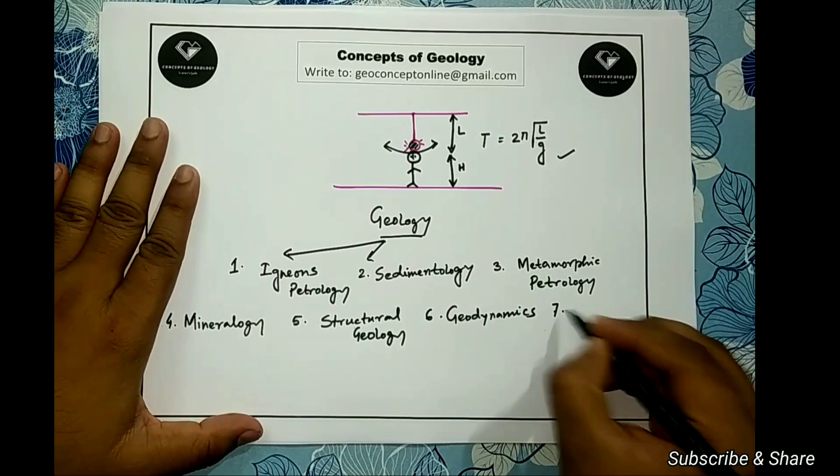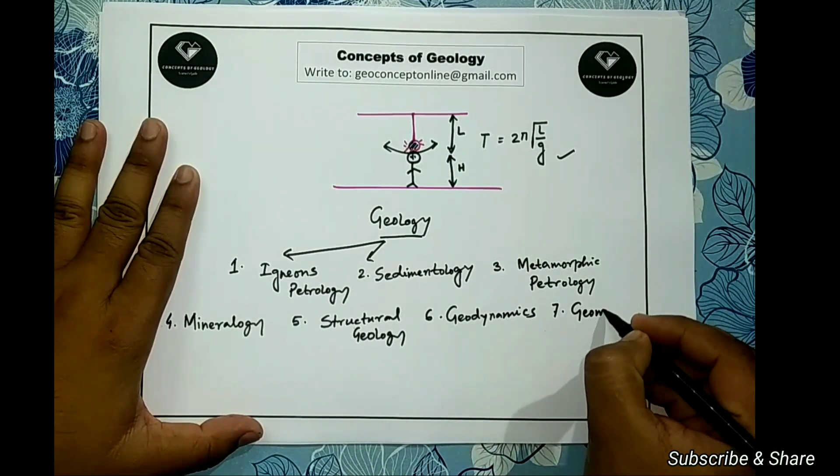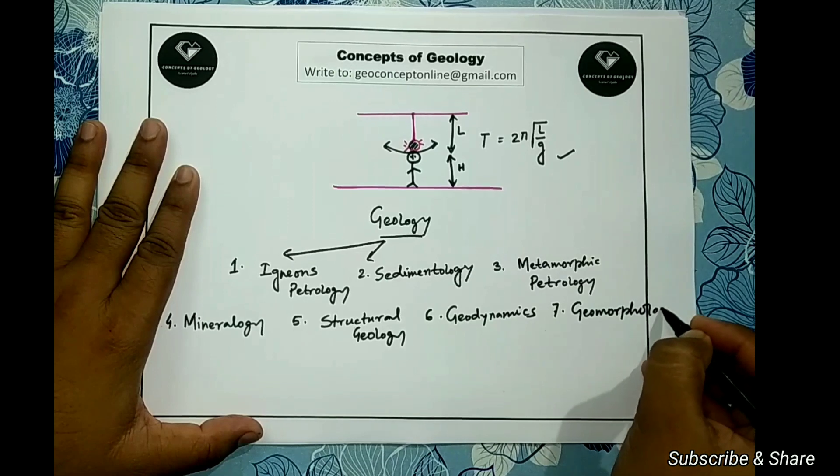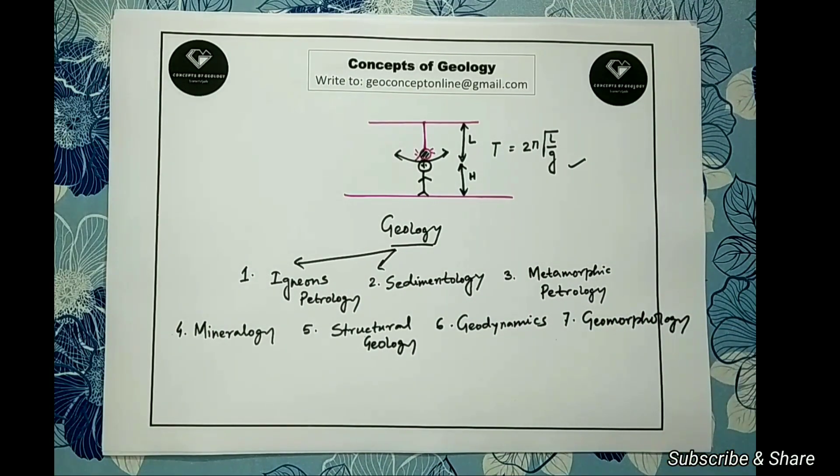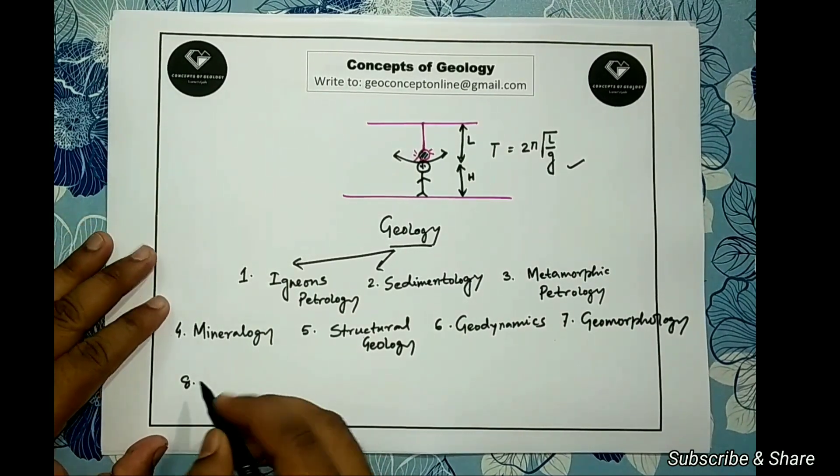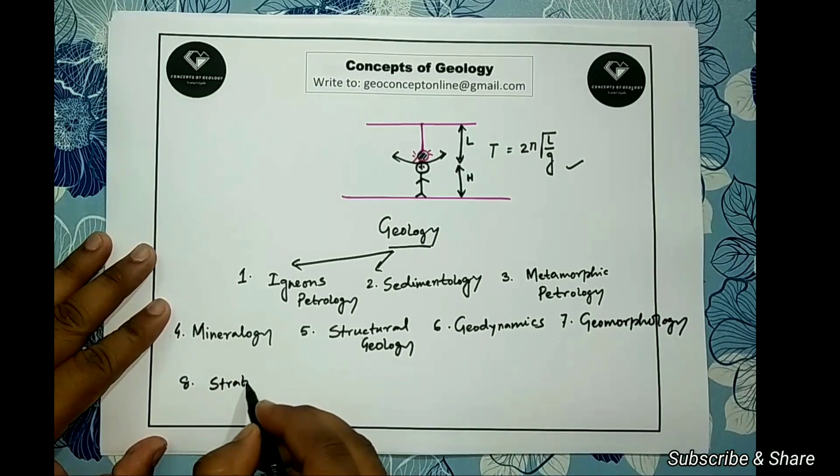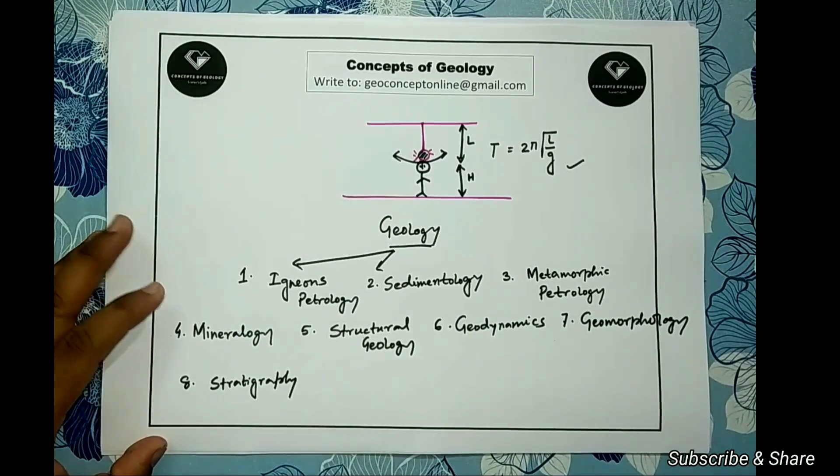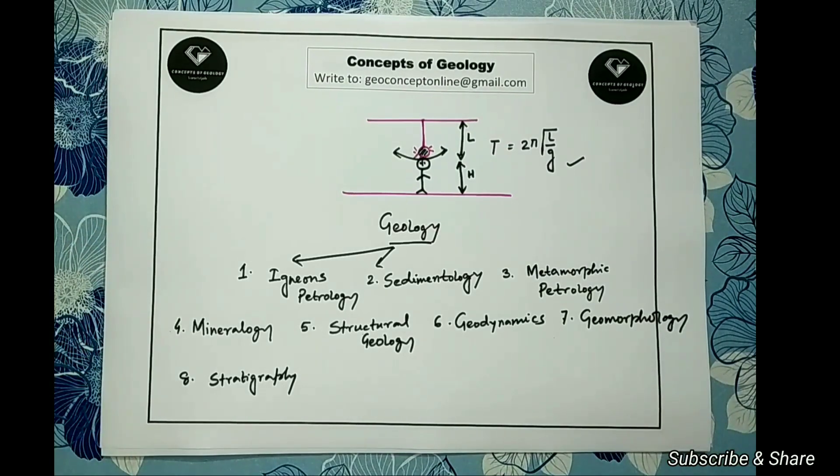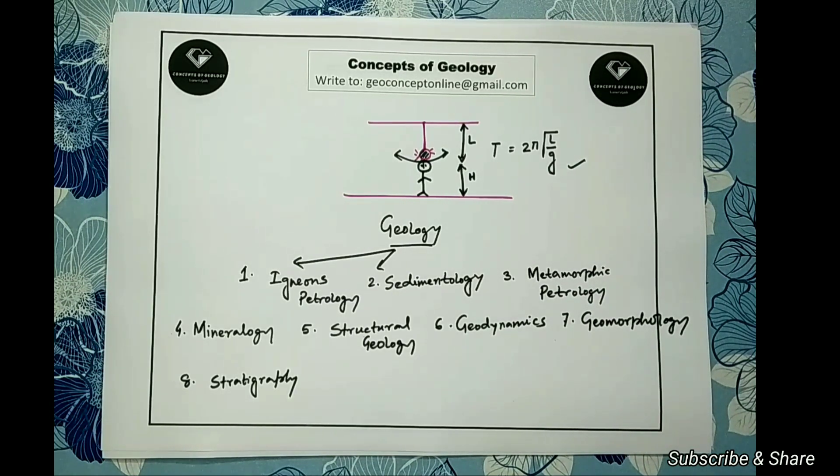Next one, number seven branch is geomorphology. Geomorphology is the study of lay of land: where is mountain, where is river valleys, this type of lay of land is studied under geomorphology. Next one is number eight, stratigraphy. Stratigraphy is often called historical geology because it deals with reconstruction of the history of the earth or an area by application of integrated knowledge of geology.